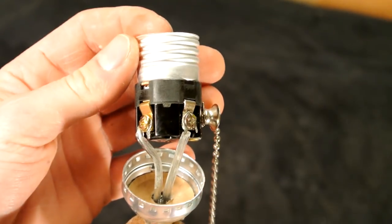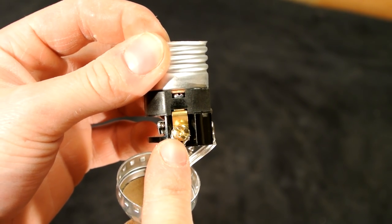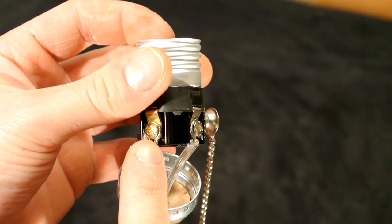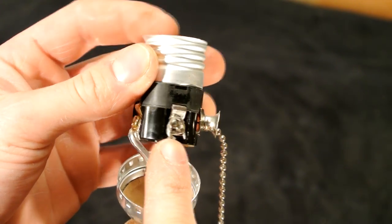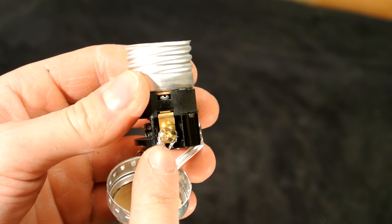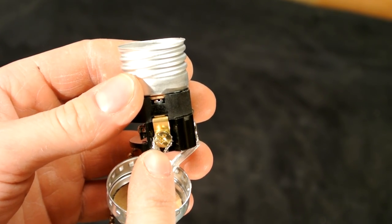Once you put your fixture wire through the actual hole you drilled, through the threaded nipple and then through the bottom of the light socket, we can strip the wires and put them under the terminals. Before I go ahead, I have to let you know electricity is very dangerous, so if you don't feel comfortable doing this then I'd suggest not doing it.